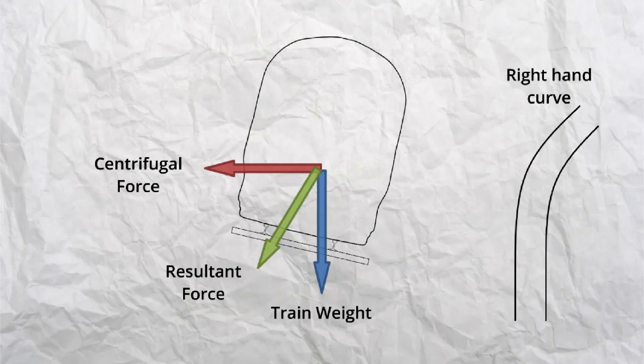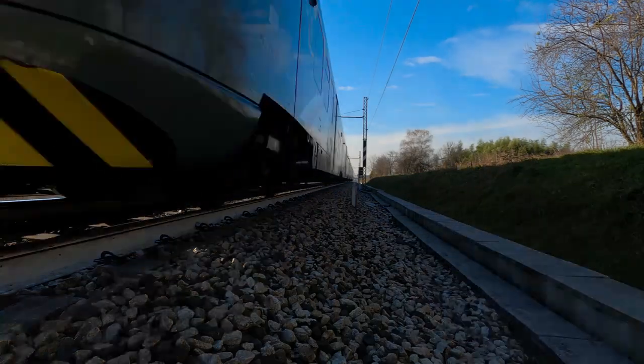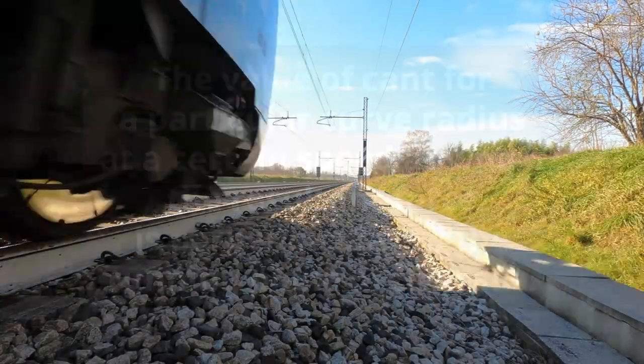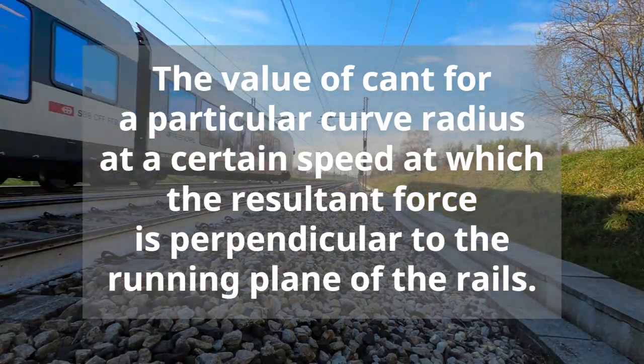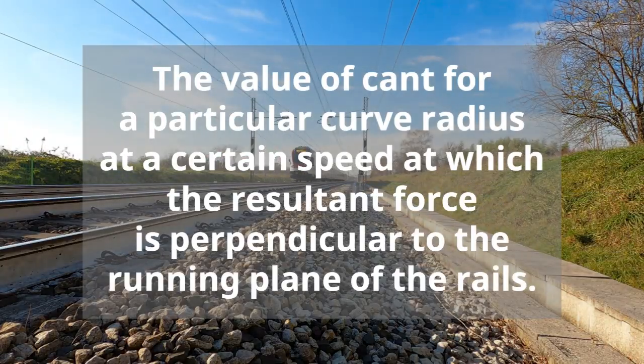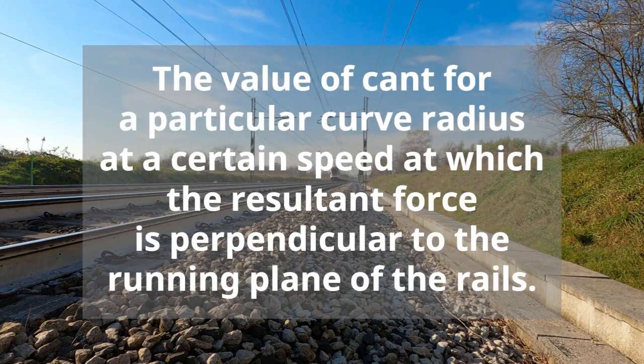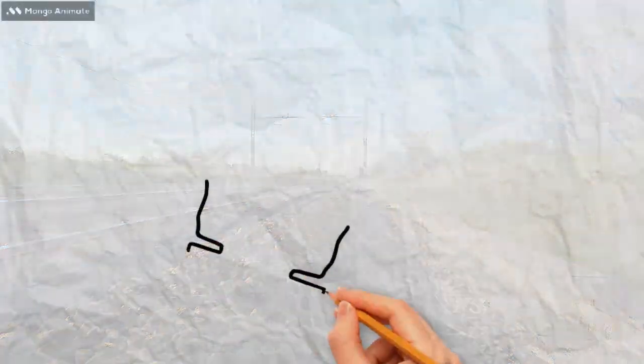This brings us on to equilibrium cant. The full definition of equilibrium cant is the value of cant for a particular curve radius, at a certain speed at which the resultant force is perpendicular to the running plane of the rails. So how does this look in practice, on our train going around the curve? Let's see.